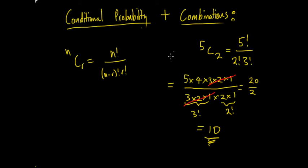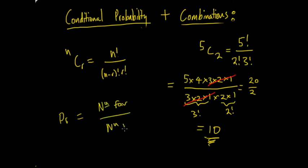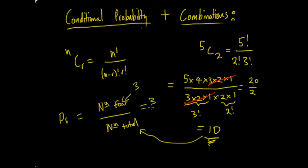In relation to probability, when outcomes are equally likely, the probability equals the number of favourable outcomes over the total number of outcomes. You can use combinations for either the numerator or denominator. For example, if the total number of possible pairs is 10 and the number of favourable pairs is 3, then the probability of one of those favourable pairs occurring is 3 out of 10.